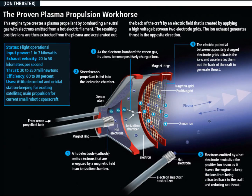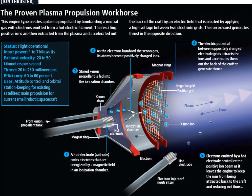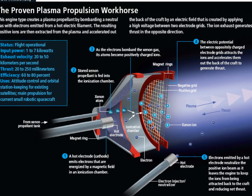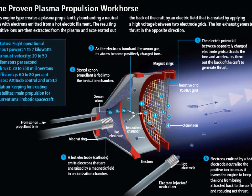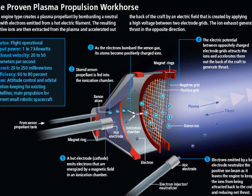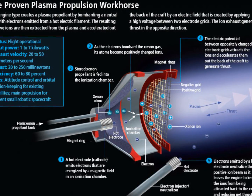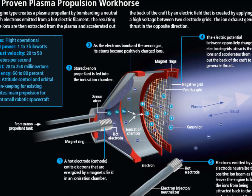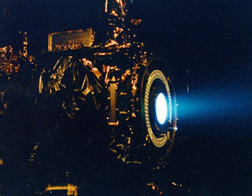Once we have these positively charged xenon atoms floating around, they begin to diffuse towards these grids on the right-hand side of the figure — these are called the acceleration grids. The innermost grid has a positive charge and the outermost grid has a negative charge. So the atoms begin to pass through the positive grid and then they're attracted to the negative grid, which causes them to accelerate massively and fly out of the back of the ship.